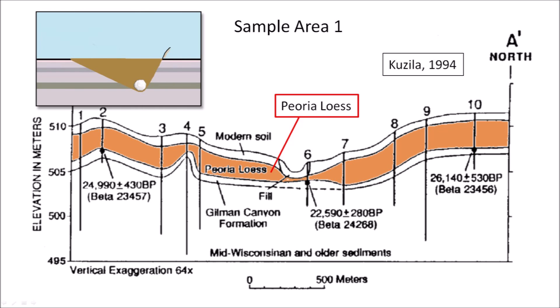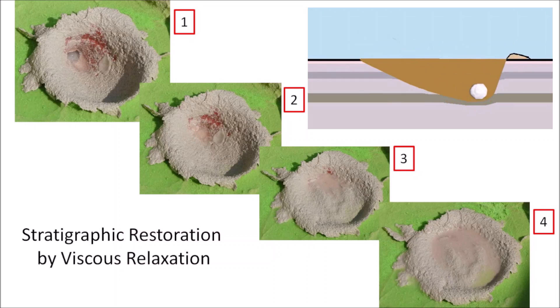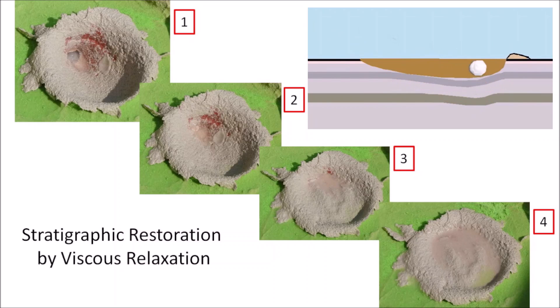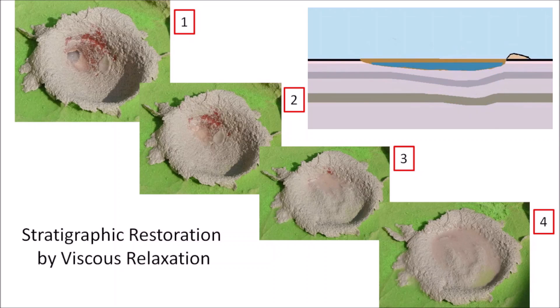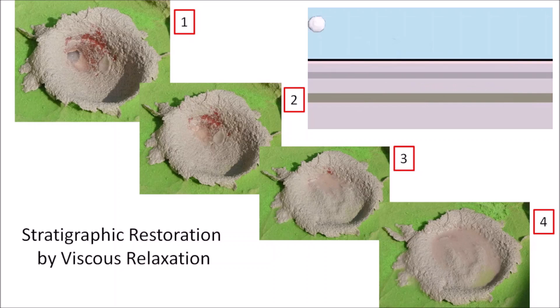However, if the Nebraska basins originated from oblique impacts of ice boulders as proposed by the Glacier Ice Impact Hypothesis, the conical shockwave of the projectile would have displaced material laterally to open up the cavity, and viscous relaxation would have restored the stratigraphy. The Peoria Loess is within 5 meters of the surface, but the impact would have penetrated several hundred meters. The fact that loess covers the Nebraska basins does not mean the basins were created before the loess was deposited. This is demonstrated by an experiment in which an ice projectile penetrated the red layer in the target and stratigraphy was restored by centripetal flow from the bottom up.